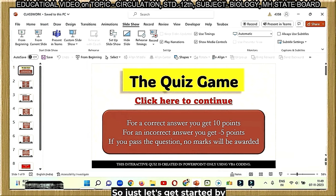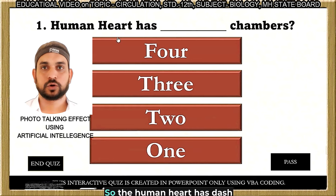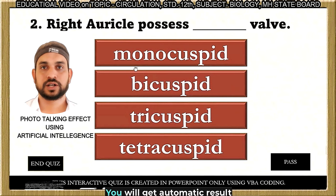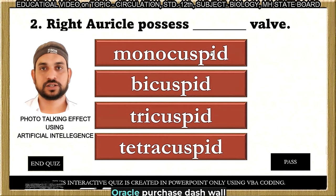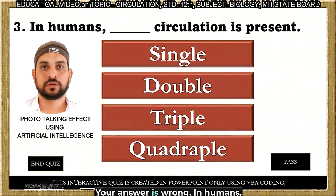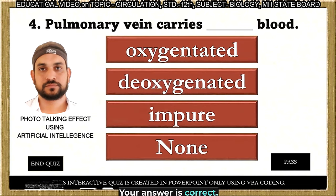Let's get started by clicking here to continue. Question: The human heart has how many chambers? Answer: Four. Correct — well done! Question: The right atrium has which valve? Answer given: Monocuspid. Wrong — your answer is wrong. Question: In humans, which type of circulation is present? Answer: Double. Correct — well done!